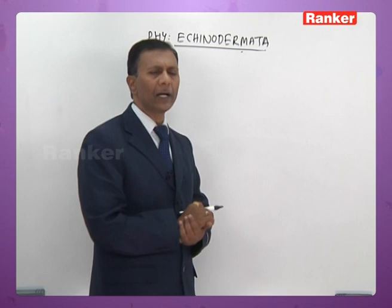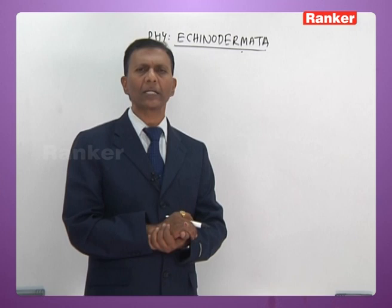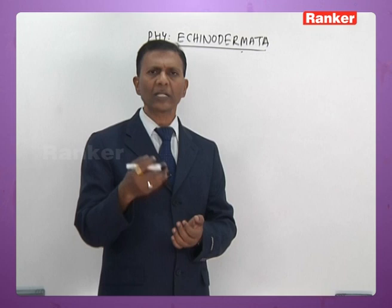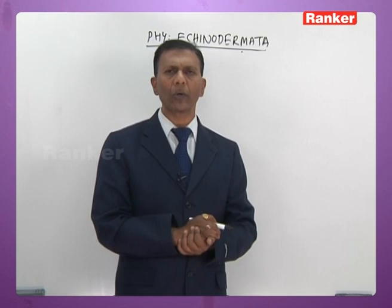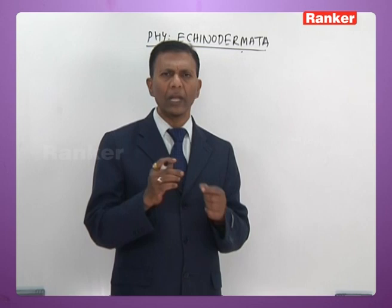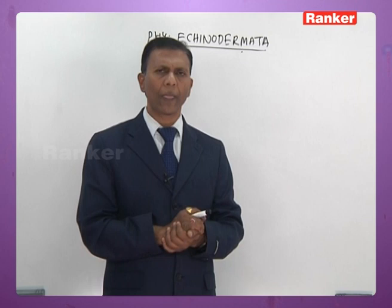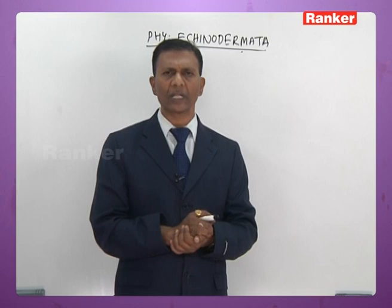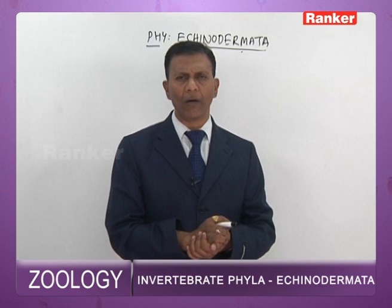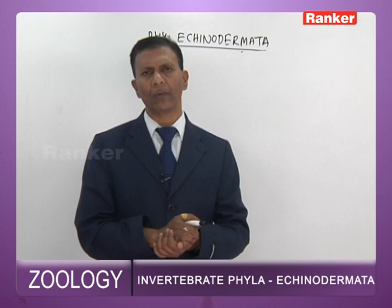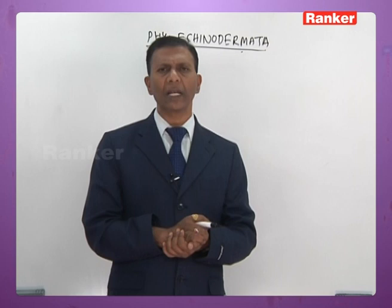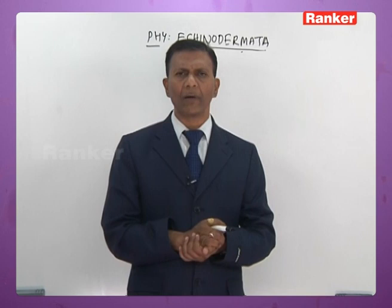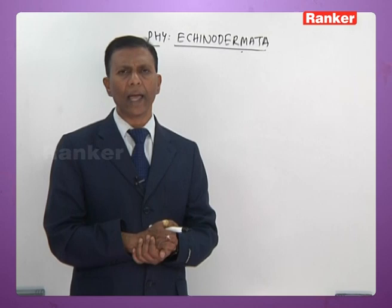In echinoderms, definite excretory organs are absent; the respiratory organs also help in excretion. The blood vascular system is open type or lacunar type without heart and respiratory pigment. The nervous system includes only radial nerves traversing through the antimeres, with sense organs — a photoreceptor eye and an olfactory tentacle — at the tip of each antimere. All echinoderms are unisexual without sexual dimorphism; male and female look alike. Life cycle is indirect, with an ancestral larva called dipleurula.